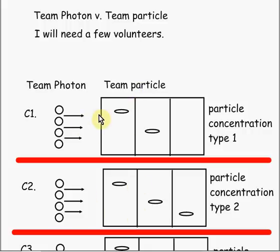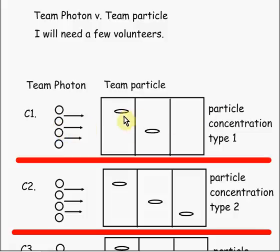We have a visual to picture what's going on. If we have Team Photon versus Team Particle, we can use some volunteers. We start off with Team Photon having 4 players and Team Particle having 2 players. As Team Photon makes its way through the playing field, each time it interacts with a player from Team Particle, it's stopped in the medium. Initially, if there are 4 photons and 2 particles, it is likely that some of the photons will make it through the playing field.